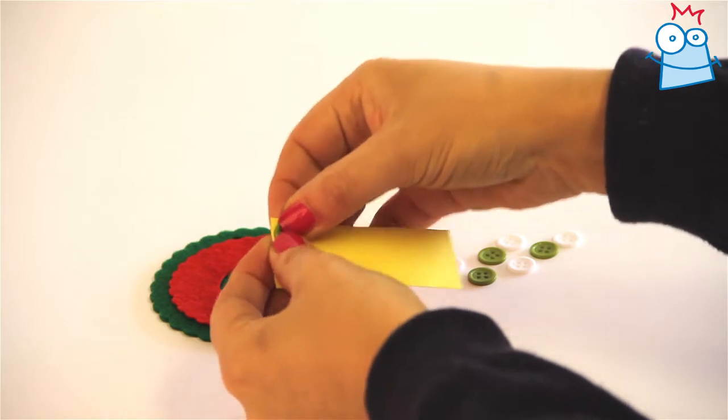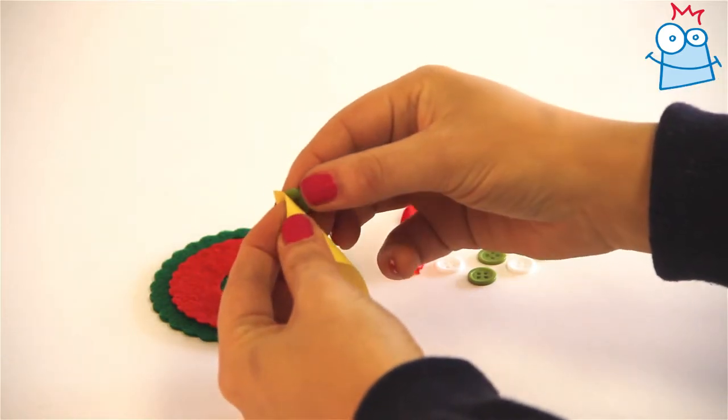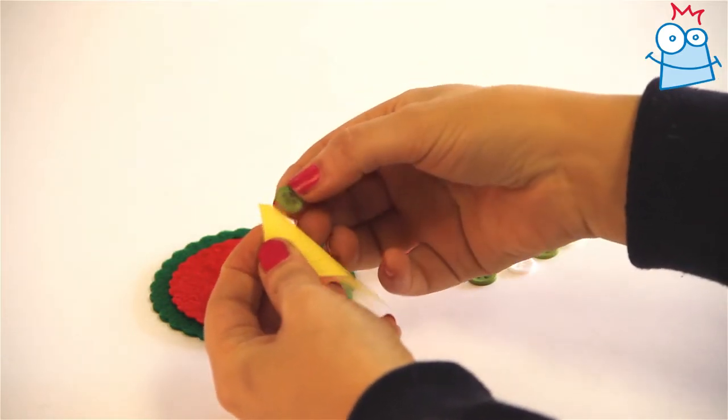Peel it back carefully and the adhesive will be attached to it, and then press it down onto the wreath.